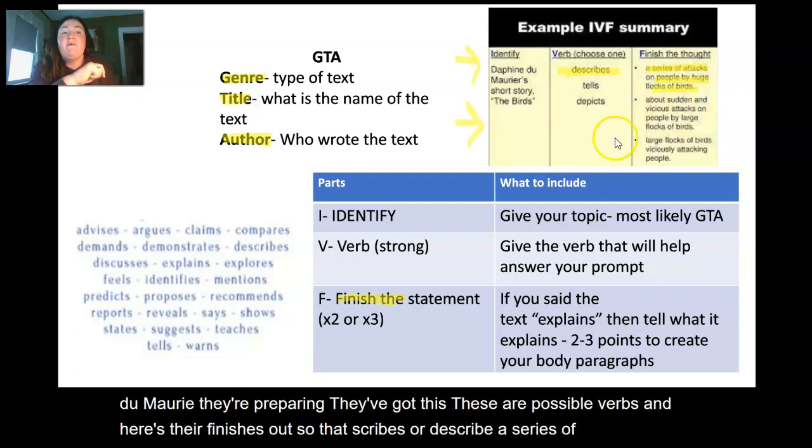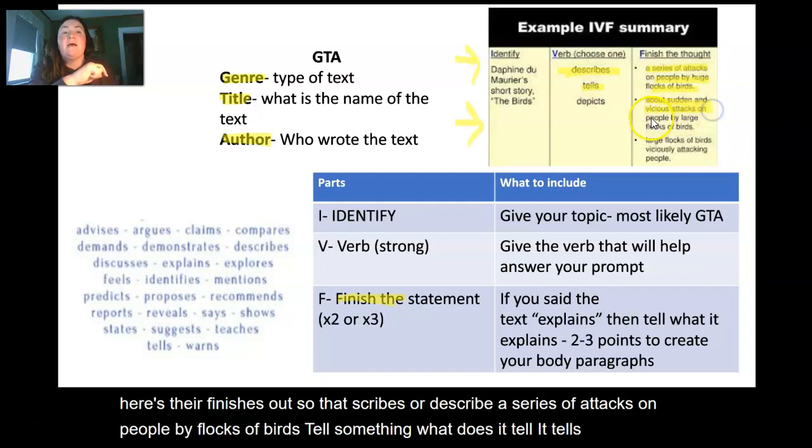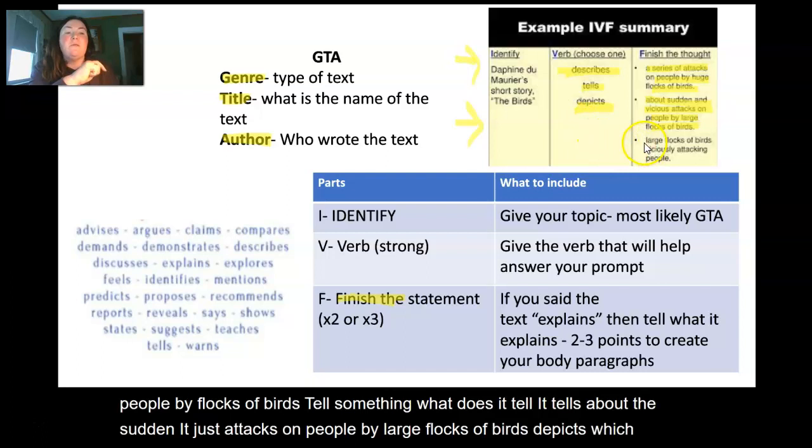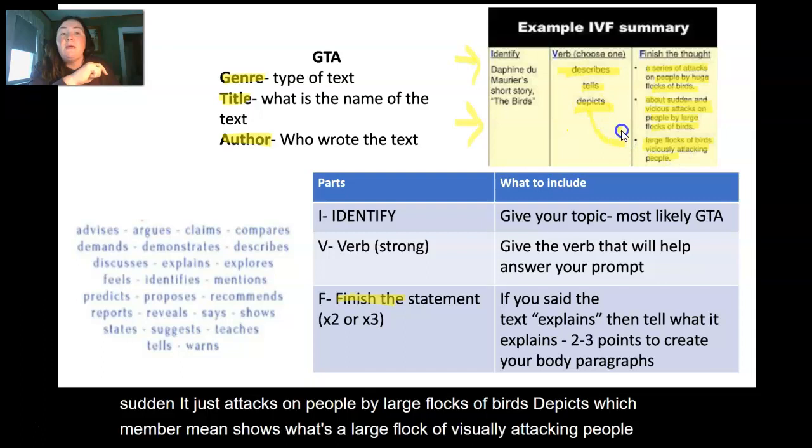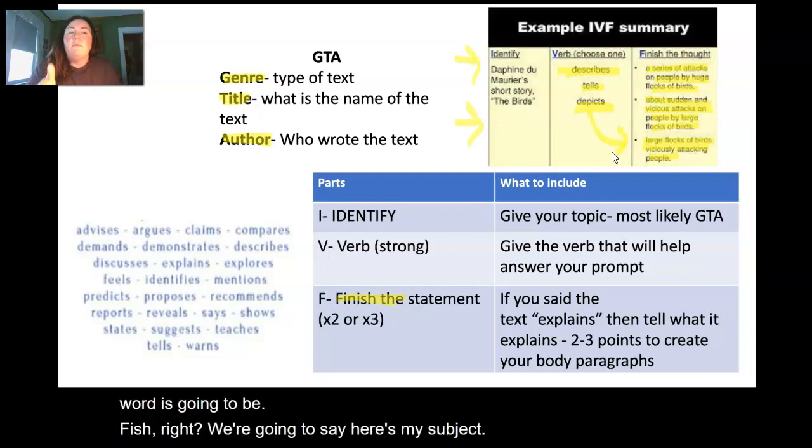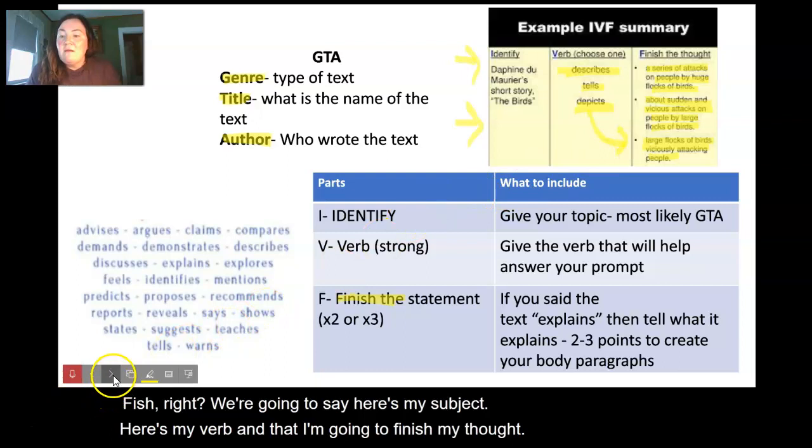Here's their finishes: it describes or to describe a series of attacks on people by flocks of birds. It tells something - what does it tell? It tells about the sudden vicious attacks on people by large flocks of birds. It depicts - which remember means shows - what does it depict? A large flock of birds viciously attacking people. This verb is going to be finished. We're going to say, okay, here's my subject, here's my verb, and then I'm going to finish my thought.